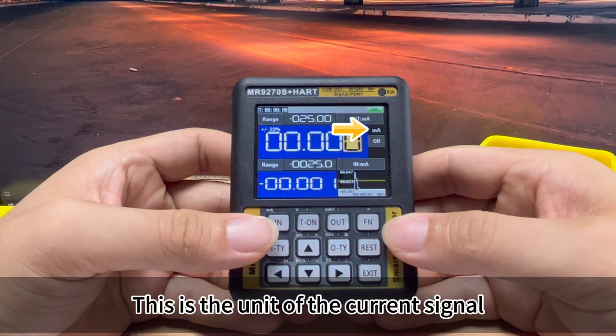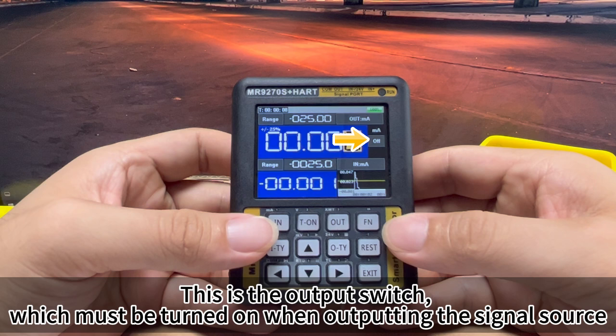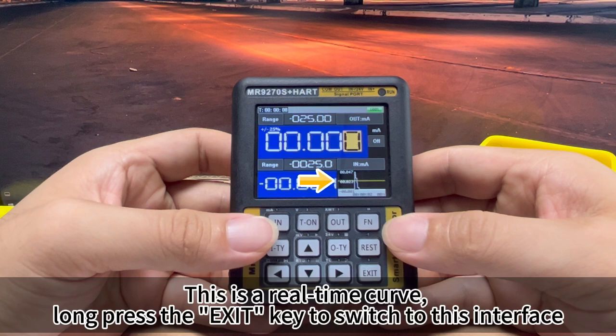This is the unit of the current signal. This is the output switch which must be turned on when outputting the signal source. This is the real-time curve.